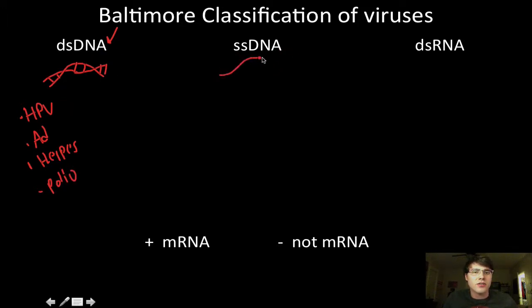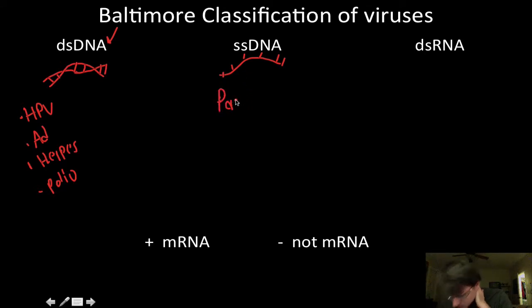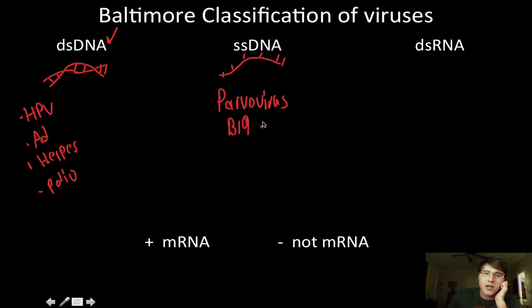There are also some viruses that contain a single-stranded piece of DNA, which is unusual. The only type our book lists is called a parvovirus — also known as B19 — and this causes a skin rash or skin irritation. It's really unusual to see single-stranded DNA in a viral genome.